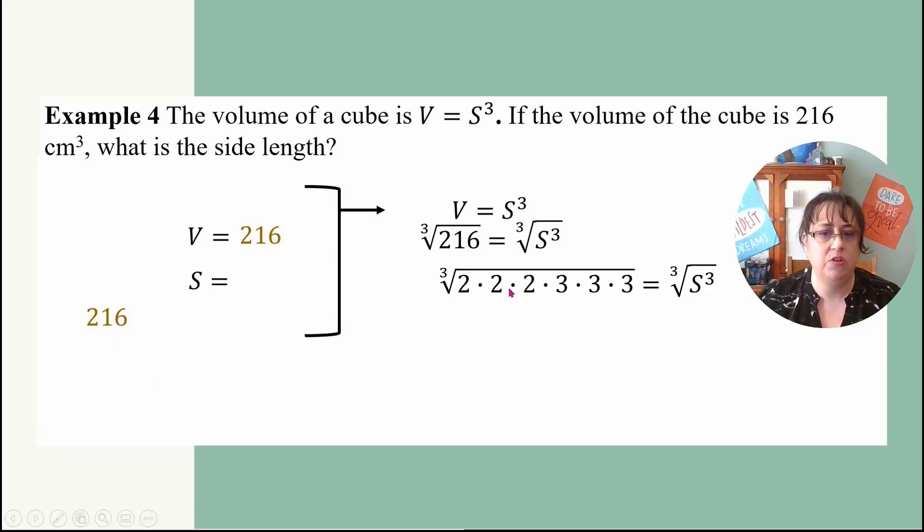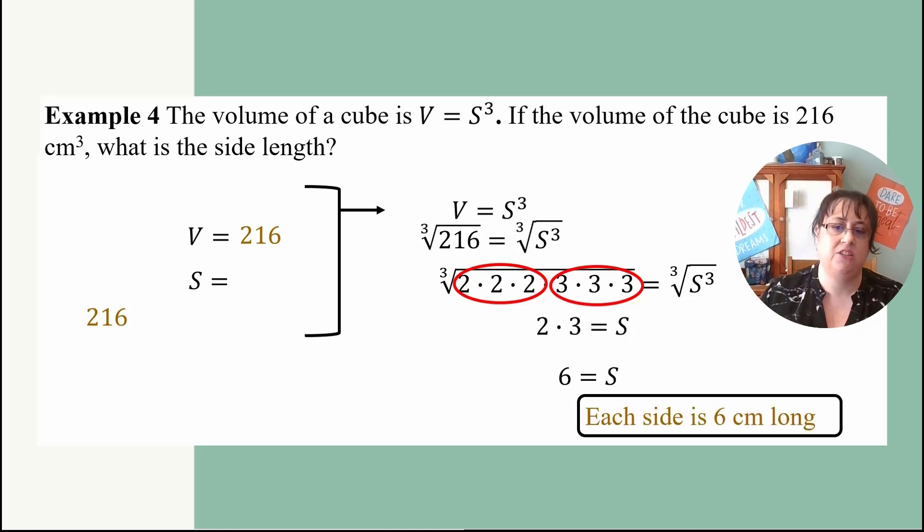So now I have the cube root of 2 times 2 times 2 and 3 times 3 times 3 is equal to the cube root of S cubed. So there's that group of 2 that I had already circled and that group of 3 that I had already circled. And so I have 2 times 3, which is 6. So 6 equals S, which means each side length is 6 centimeters long.